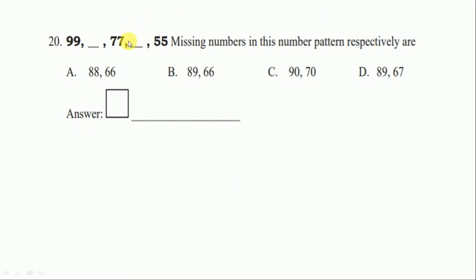Question number twenty: the missing numbers in this pattern are — we see nine nine, then a gap, then seven seven, then a gap, then five five. Moving forward from five: six six, seven seven, eight eight, nine nine. So the missing numbers are eight eight and six six. The correct option is option A. These are questions one to twenty for fifth class. In the next class we solve questions twenty-one to twenty-eight. Don't forget to subscribe, share our channel, and like the video. Thanks for watching.